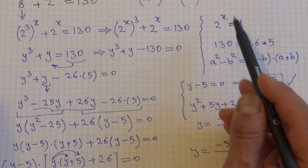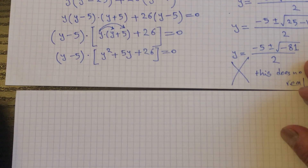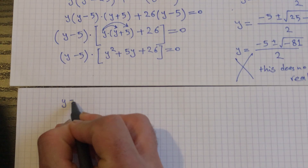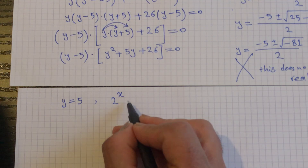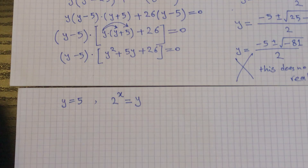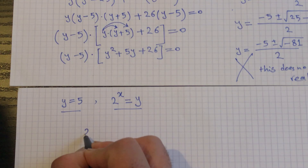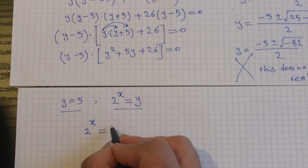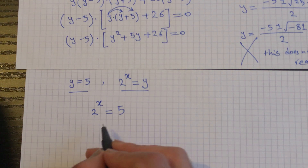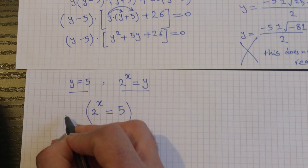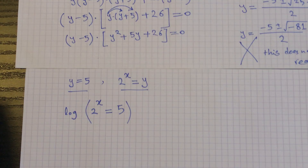We go forward with y equals 5. Recall that in the first step we defined y as 2 to the power of x, so with y equal to 5, we now have 2 to the power of x equals 5, and we need to solve this equation to find x.